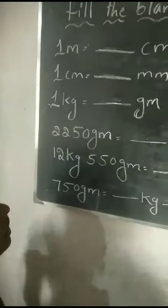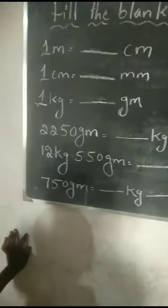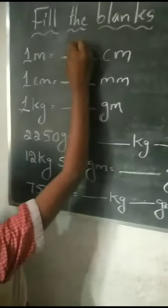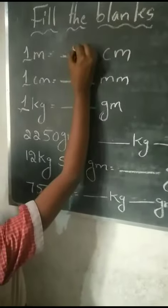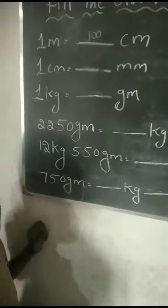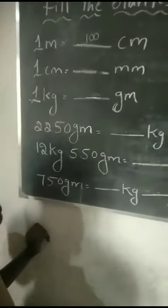1 meter is equal to how many centimeters? 1 centimeter is equal to how many millimeters? 10.